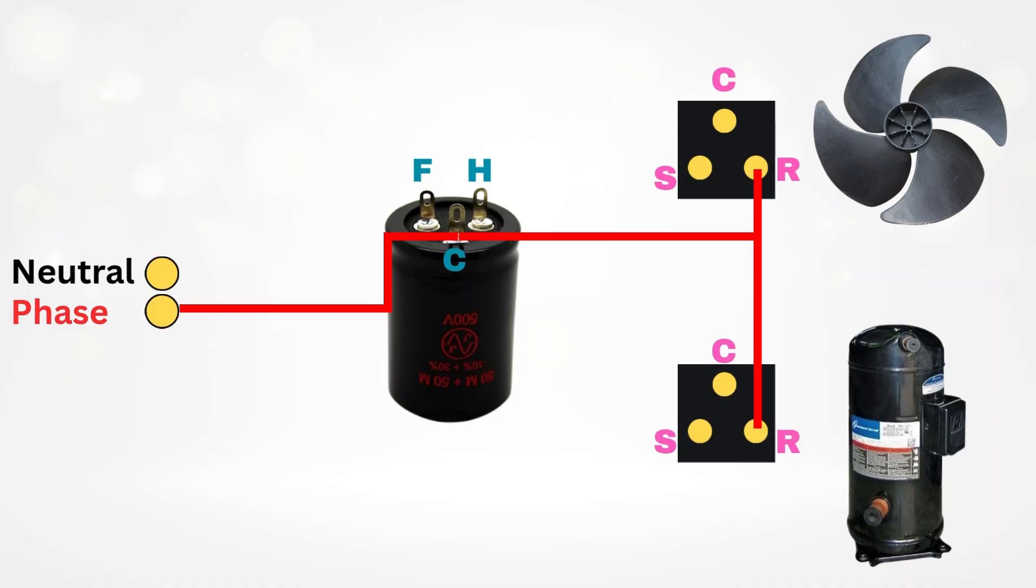Then, connect a wire from the fan terminal of the capacitor to the starting terminal of the fan motor. Similarly, connect another wire from the Herm terminal to the starting terminal of the compressor.